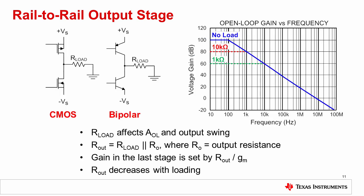When using an amplifier with a rail-to-rail output stage, loading the output can shift the DC AOL. The example AOL curve shows what can happen when connecting different loads: connecting a 10K load reduces the DC AOL from 100 to 80 dB, and connecting a 1K load drops AOL an additional 20 dB down to 60 dB. Some amplifier topologies are more sensitive to this effect than others. In general, CMOS amplifiers are more sensitive than bipolar because of their output impedance interacting with the load. Since TI models properly model output impedance, this effect can be quantified during simulation.